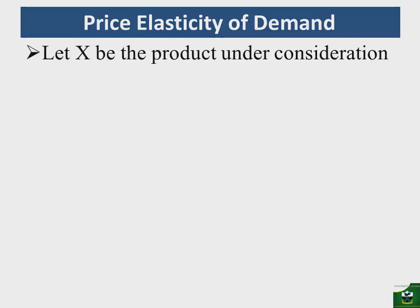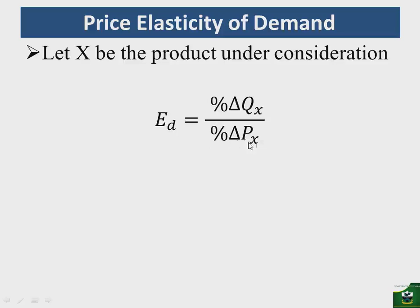If we let X be the product under consideration — so good X can be anything: a car, guavas, mangoes, bread, butter, and so on — then elasticity of demand as per definition is the percentage change in the quantity demanded of commodity X divided by the percentage change in the price of commodity X. The delta symbol here is used to mean change. Now, since from the law of demand a higher price is associated with a lower quantity demanded, holding other factors constant, the elasticity of demand will be negative. But for the sake of reading numbers, we will ignore the negative — that is, we disregard the negative when we find our elasticity of demand.